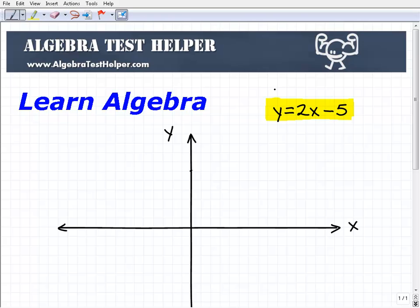This line is in y equals mx plus b form, which means it's in slope-intercept form, so it's going to be pretty easy to graph.